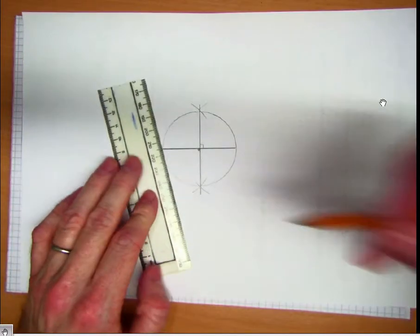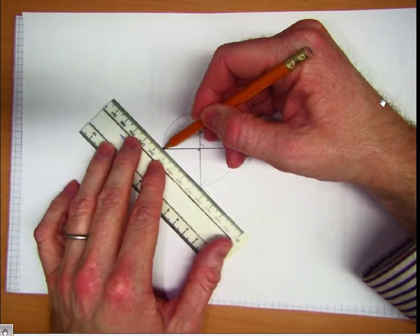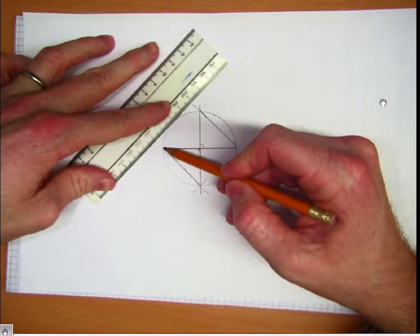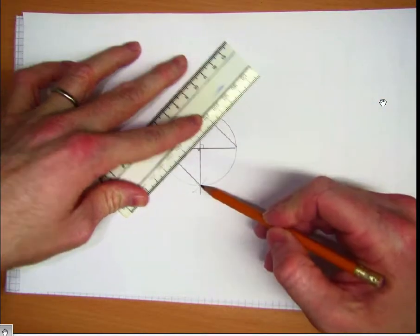And if we connect these four points here, we have a square.